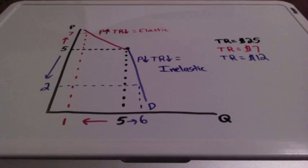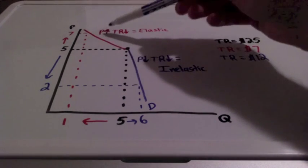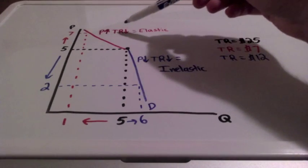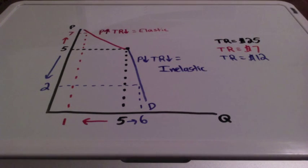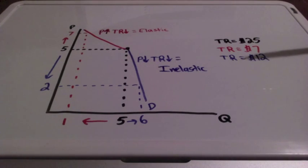For oligopolies, the demand curve is kinked. We have the elastic side, where when price goes up, total revenue is going down, and that's labeled in red. And we have the inelastic side. When price goes down, total revenue will also go down, and this is labeled in blue.